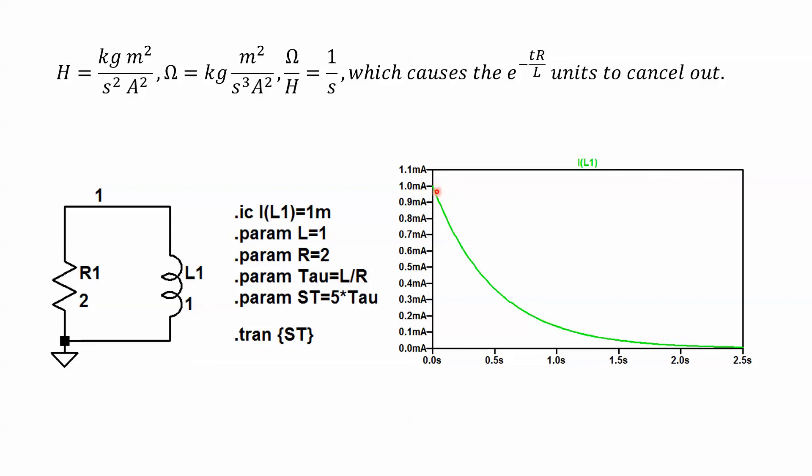And then yeah, just a quick review, we start off at I_0 and then it decays exponentially to almost zero at five tau, because e to the minus five is pretty close to zero. And this is just an LTSpice file where dot IC initial condition of that inductor is one milliamp.